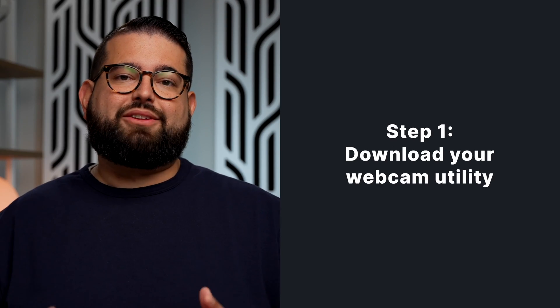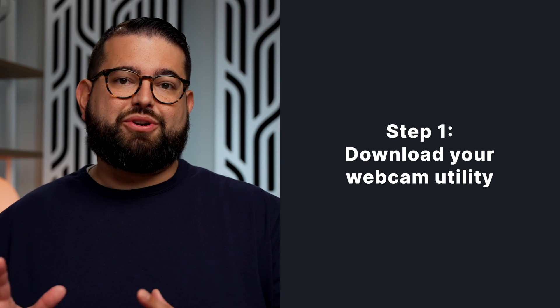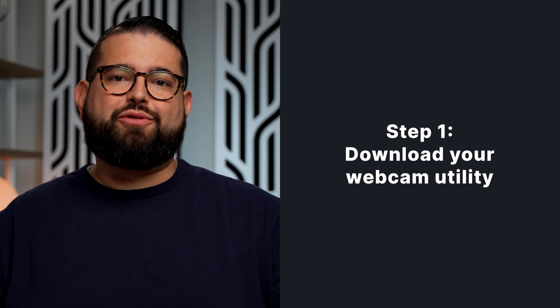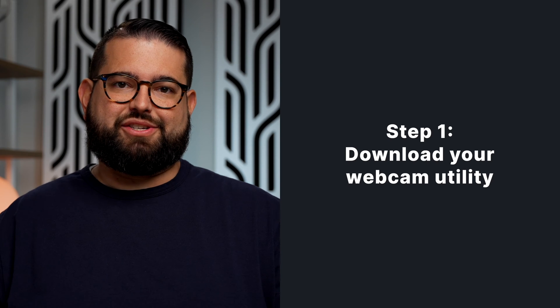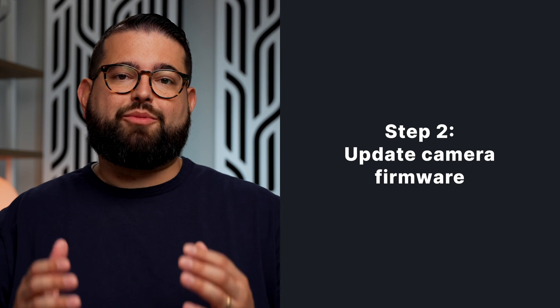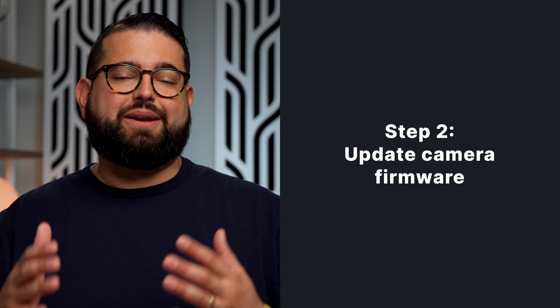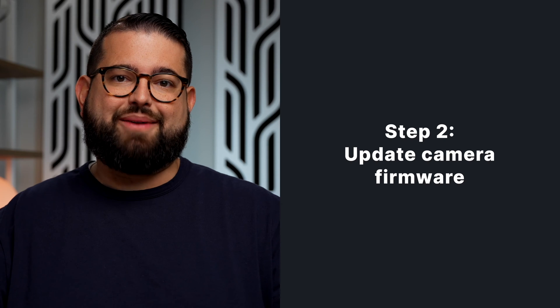The first thing you want to do is download the utility made by your camera manufacturer to your computer that allows it to talk to the camera over a USB-C connection. We put links in the video description to Sony, Nikon, Canon, and Panasonic, and you can download the utilities to use your camera as a webcam at those links. You also want to make sure that the firmware on your camera is up to date — follow the instructions from your manufacturer on updating the firmware.